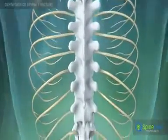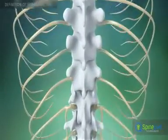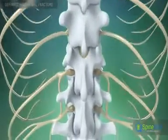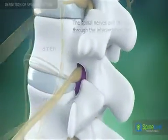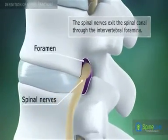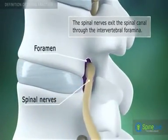The spinal nerves branch off your spinal cord in pairs and travel through small openings between your vertebrae called the intervertebral foramina.